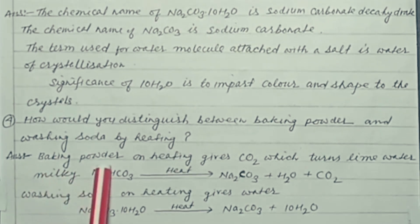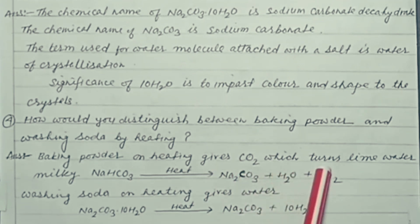Baking powder on heating gives carbon dioxide which turns lime water milky. Sodium hydrogen carbonate on heating gives sodium carbonate plus water plus carbon dioxide. This carbon dioxide turns lime water milky.